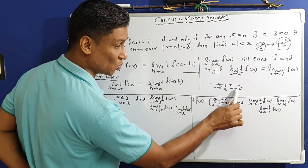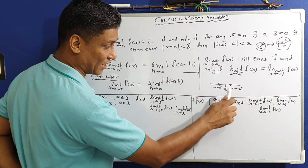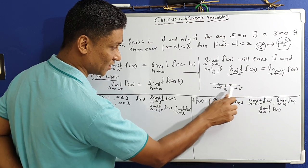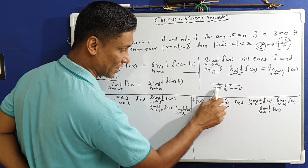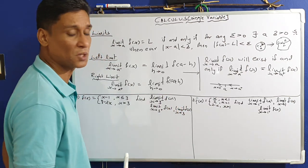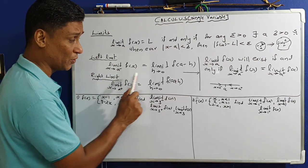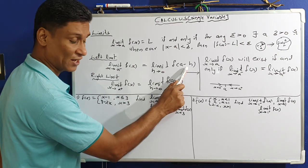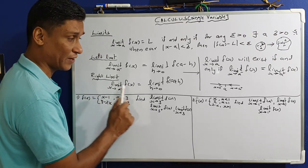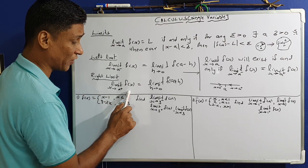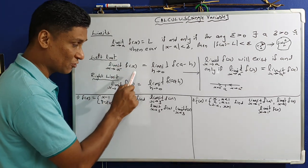For the right limit, we write x tends to a plus. x tends to a plus means the value of x approaches a from the right. The right limit formula is: limit x tends to a plus of f of x equals limit h tends to 0 of f of a plus h. The left limit formula is: limit x tends to a minus of f of x equals limit h tends to 0 of f of a minus h.